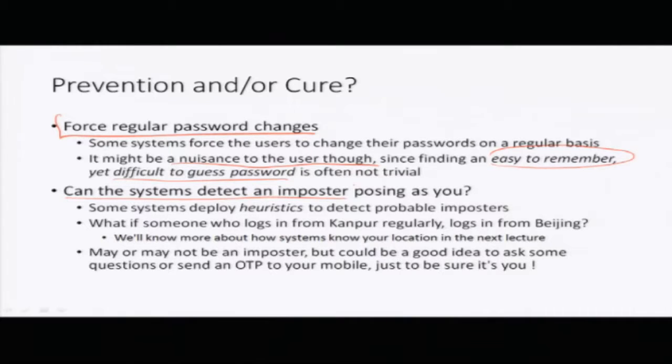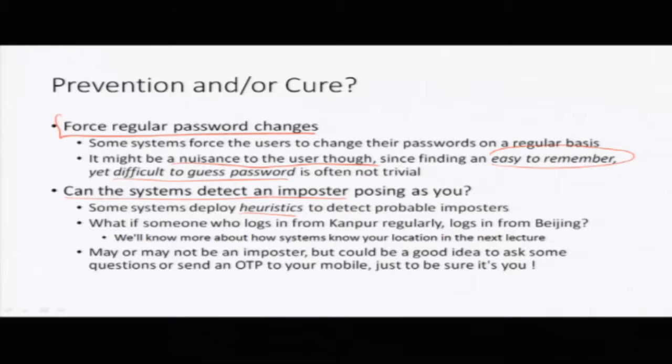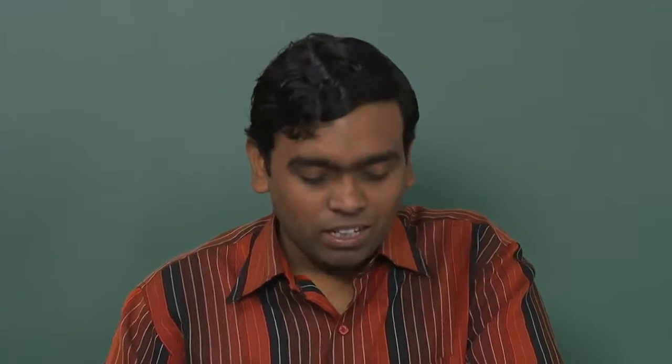Can the system somehow detect an imposter? Let us assume that the imposter did get hold of your username and password and wants to login to the system as you. Well, some systems deploy heuristics to detect probable imposters. For example, if I am logging in from Kanpur regularly and suddenly I login from Beijing, that is going to be suspicious. Some systems use this information to detect probable attacks, though they are not sure whether it was actually an attack.